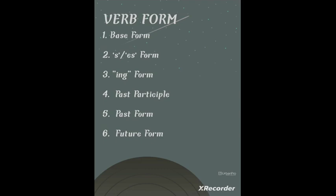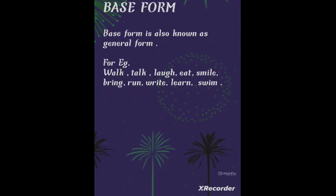Let us begin. The first one is base form. Base form is also known as the general form — a basic form of a verb. There is no addition; it is used as it is. It is used in many different places. Examples of base form: walk, talk, laugh, eat, smile, bring, run, write, learn, and swim.